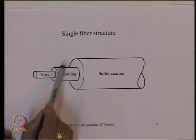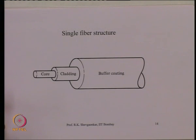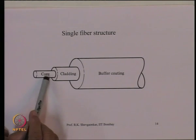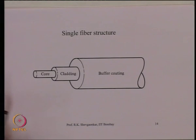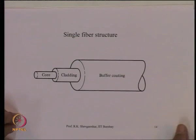To support this structure mechanically, there are other layers called buffering layers, but the buffering layer has no role to play as far as propagation of light is concerned. Today we investigate under what conditions light will propagate inside the core over very long distances without much loss, and find parameters like efficiency and data rates.